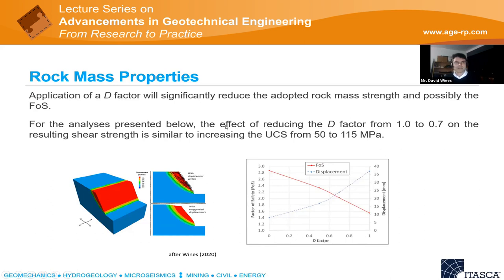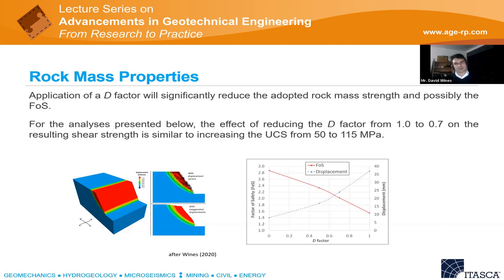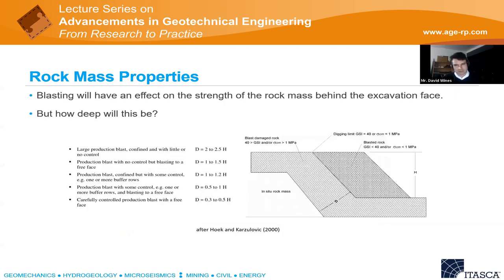For this particular example, reducing the D factor from 1 to 0.7 — typical values sometimes used immediately behind the excavation face — is similar in effect to increasing the UCS from 50 to 115 MPa. The point is that you could spend a lot of money refining knowledge of UCS, GSI, and other rock mass parameters through drilling programs, and then have that overwritten by just changing the D factor. So this is something we need to be very careful with.